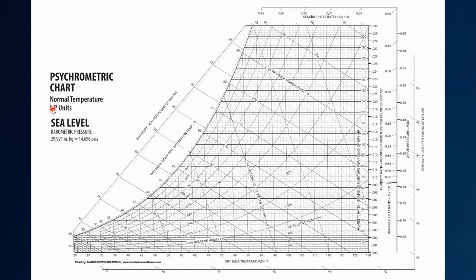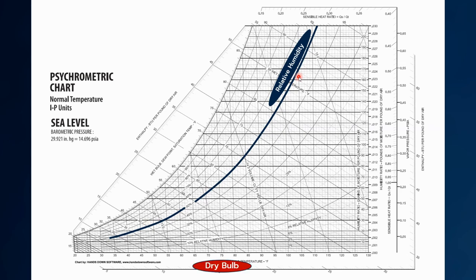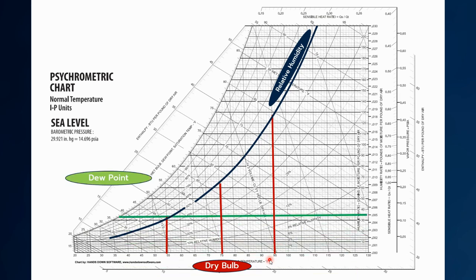This is a psychrometric chart — if you're not very familiar with it, we'll probably do another presentation because there's a lot of information here, but I'm going to make it very simple. We'll plot the relative humidity of 50%, represented by this line we just put on here. Then we'll draw in the three dry bulb lines we have: 55 degrees, 75 degrees, and 95 degrees, and plot the intersection of all this with our dew point lines.